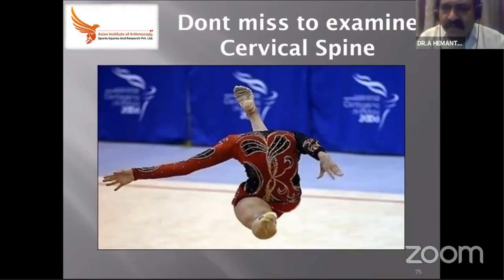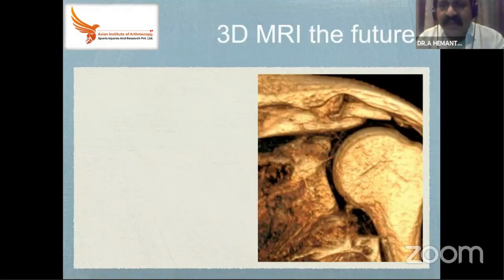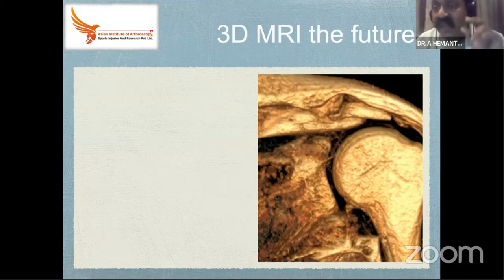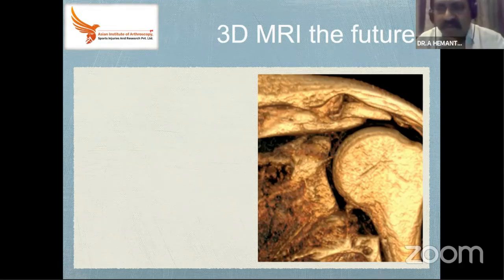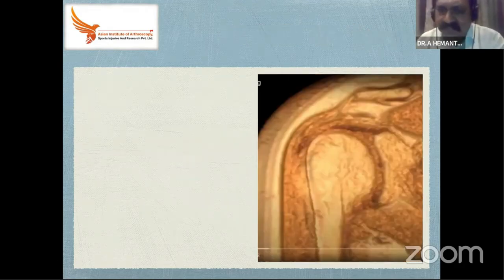Never miss examination of the cervical spine — missing it in bilateral shoulder pain is going to be a big disaster. MRI of the cervical spine is indicated in bilateral shoulder pains. The future will be 3D MRI, which gives a lot of information and makes life easier — you can rotate the entire image and see where the pathology is. But if your brain doesn't know the structure, you will not be able to identify it. Anatomy, anatomy, anatomy — if you know the anatomy you can correlate on MRI and see it in live surgeries.